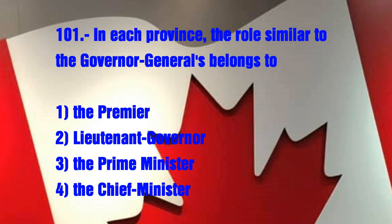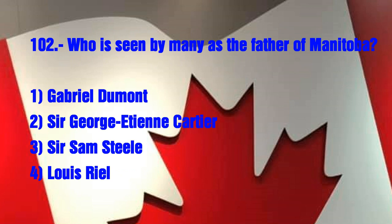In each province, the role similar to the Governor General belongs to: 1. The Premier, 2. Lieutenant Governor, 3. The Prime Minister, 4. The Chief Minister. The answer is 2. Lieutenant Governor.